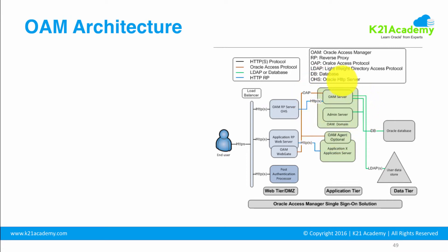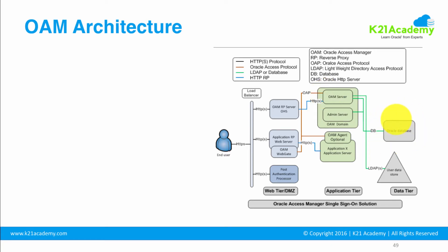Oracle Access Manager is deployed on a WebLogic domain, and a WebLogic domain consists of an admin server and a managed server. On the admin server you have the Oracle Access Manager console deployed — that is a graphical user interface to manage Oracle Access Manager. The managed server, which is the OAM managed server, is where actual authentication and single sign-on happens. On the right-hand side is the database where it stores all the policies, which are rules governing how a particular URL is protected.